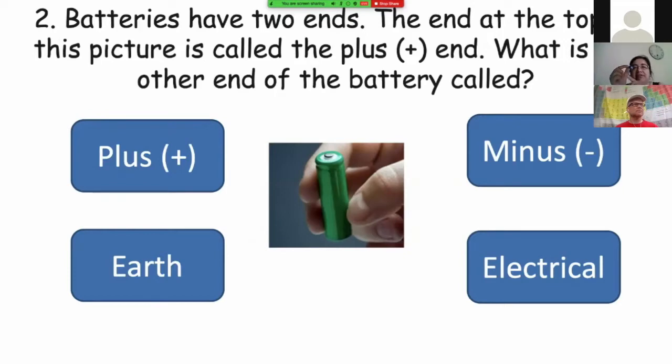A battery has two ends. The first one is a positive one, a plus one. The other one, is it another plus? Probably minus. Is it called earth? Or simply it is called electrical? Which one?